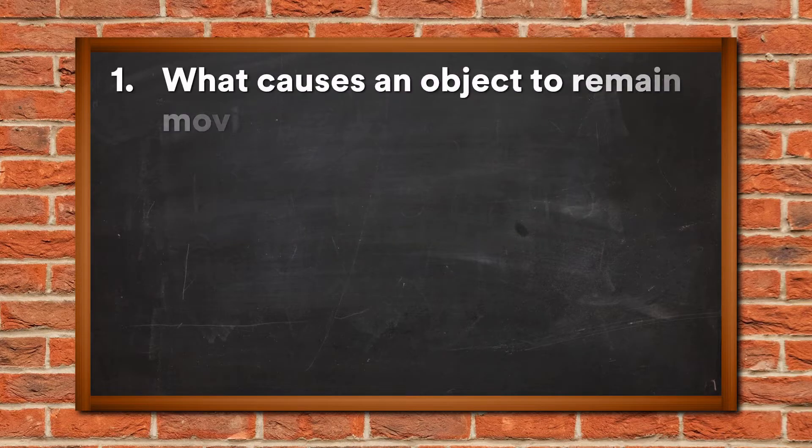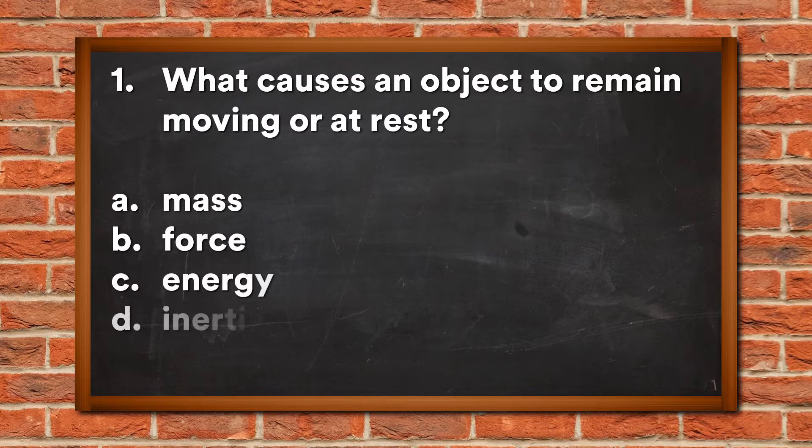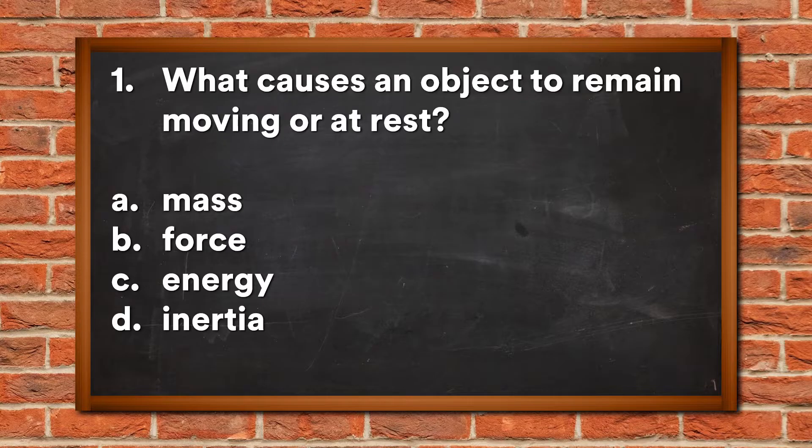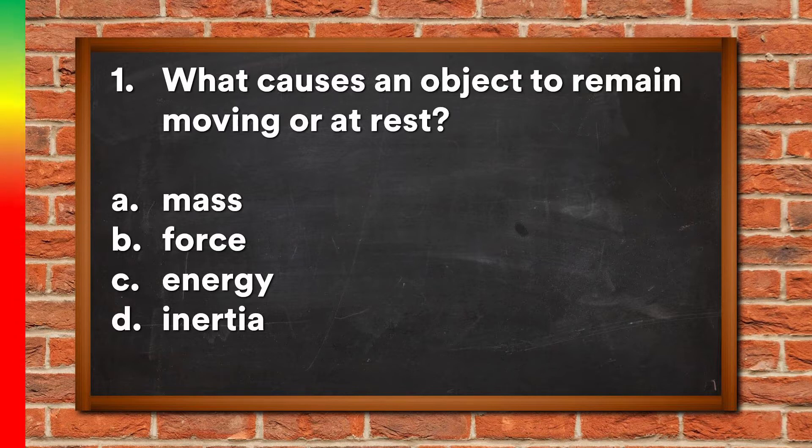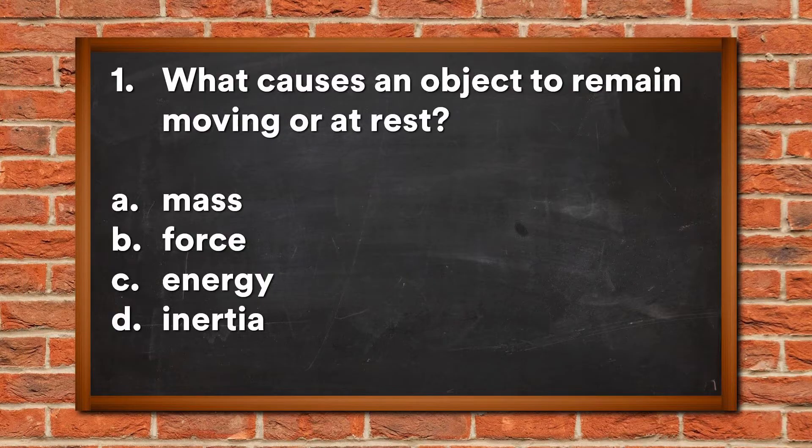Question 1: What causes an object to remain moving or at rest? A. Mass, B. Force, C. Energy, D. Inertia. The answer is D, Inertia.